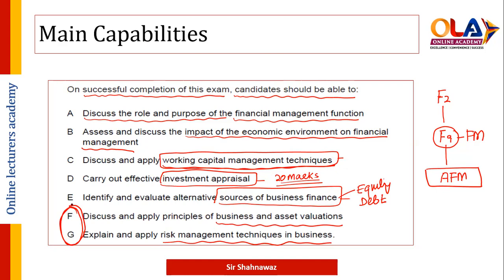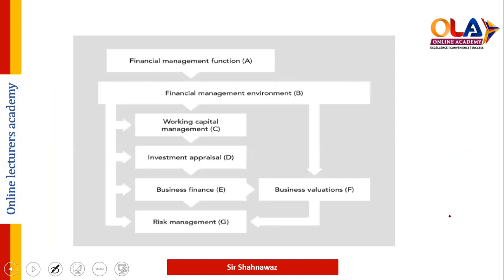Business valuation में हम equity की valuation, debt की valuation, और किसी business को अगर take over करना है तो उसकी valuation के methods discuss करेंगे। Risk management में हम particularly discuss करेंगे currency को कैसे manage किया जाता है और interest rate के against जो risk होता है उसको किस तरह manage किया जाता है। यह एक diagram है जो FM के components — A, B, working capital, investment appraisal, business finance, business valuation, और risk management — को discuss कर रहा है।